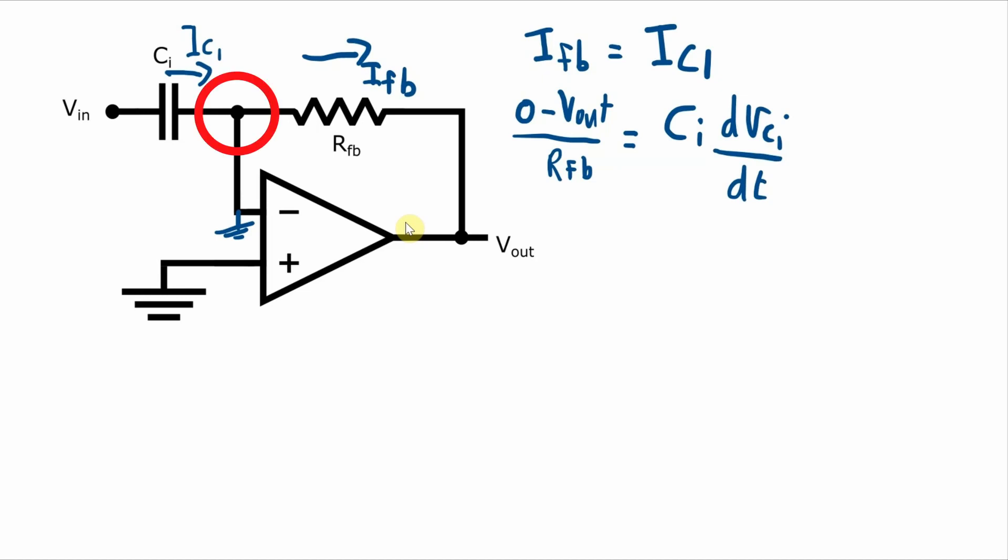The voltage across this capacitance is the same as Vin, because again, the voltage at this node right here is zero. So we get negative Vout over Rfb is equal to Ci times the rate of change of the input voltage.